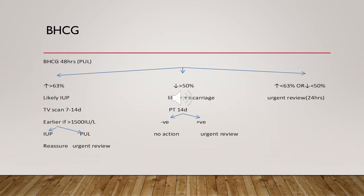Beta-hCG and pregnancy of unknown location: as noted, there is a cut-off value for ultrasound to identify pregnancy. If the beta-hCG is below this cut-off value, repeat the beta-hCG in 48 hours. If beta-hCG increases by at least more than 63 percent, this is likely an intrauterine pregnancy, and you can provide the patient with a transvaginal scan in 7 to 14 days, or earlier if the level is more than 1500.